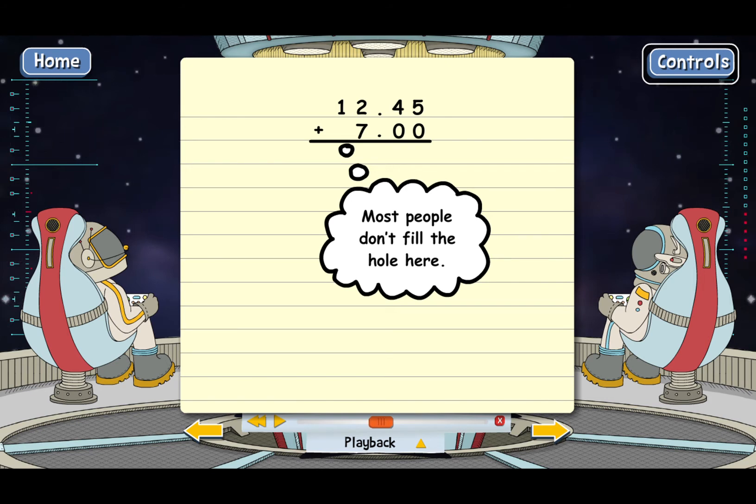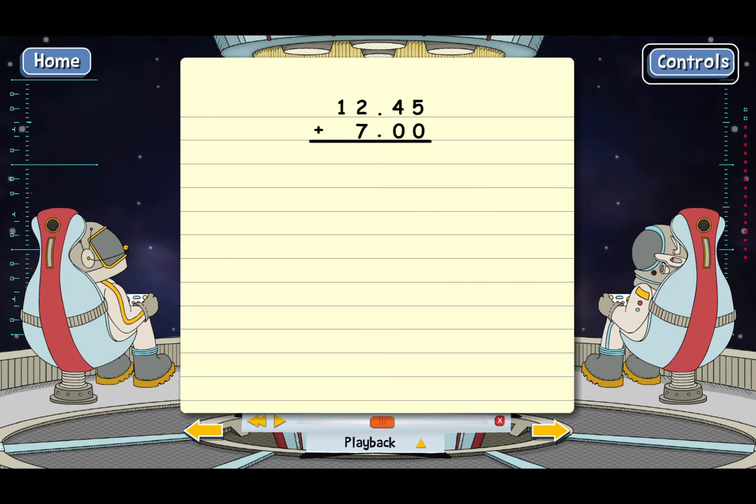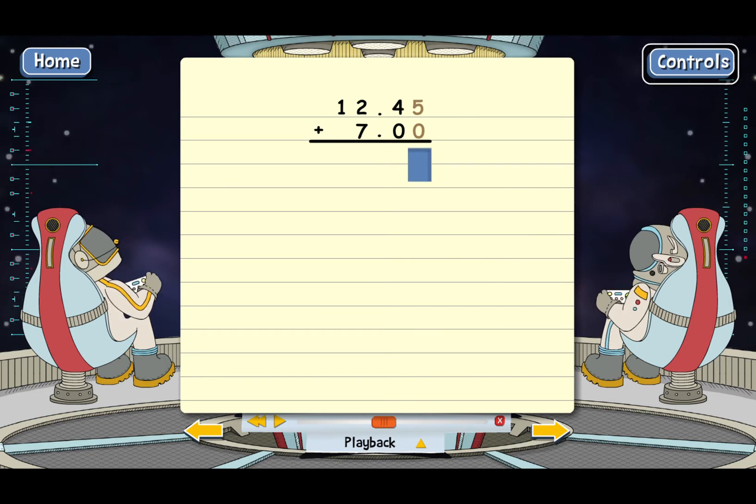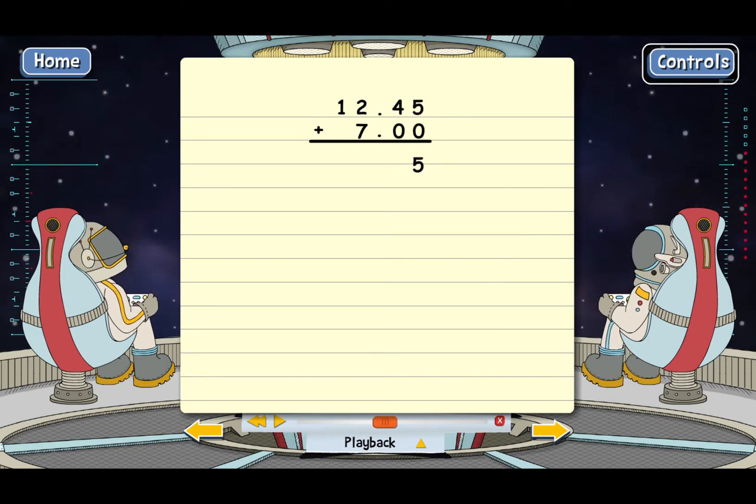So now we're ready to add. Why don't you add the first column? What's 5 plus 0? Good. Now the second column. What's 4 plus 0? That's right.